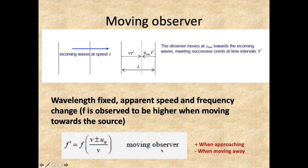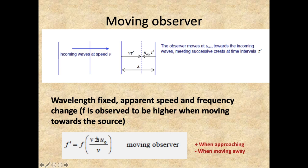For the moving observer case, the formula is also given in the data booklet. F is the emitted frequency, F' is the observed frequency, V is the speed of the wave, and U₀ is the speed of the observer. When the observer is moving closer to the source, it receives wavefronts more frequently. With the plus or minus in the numerator, if the observer is approaching we use the plus sign — the numerator is larger than the denominator, giving a ratio greater than 1 and a higher observed frequency. When moving away and hearing a lower frequency, we use the minus version.